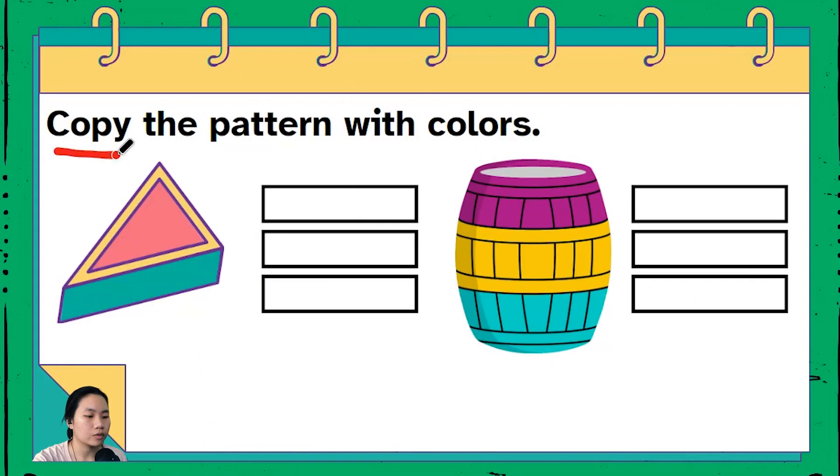Okay now we have to copy the patterns with colors. So I have two objects over here they have their own color patterns. For example, this one has purple, yellow, and then green.